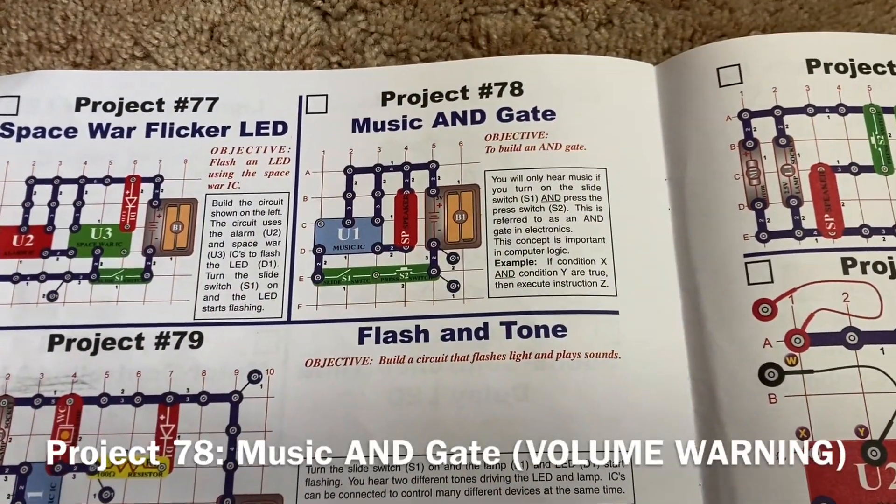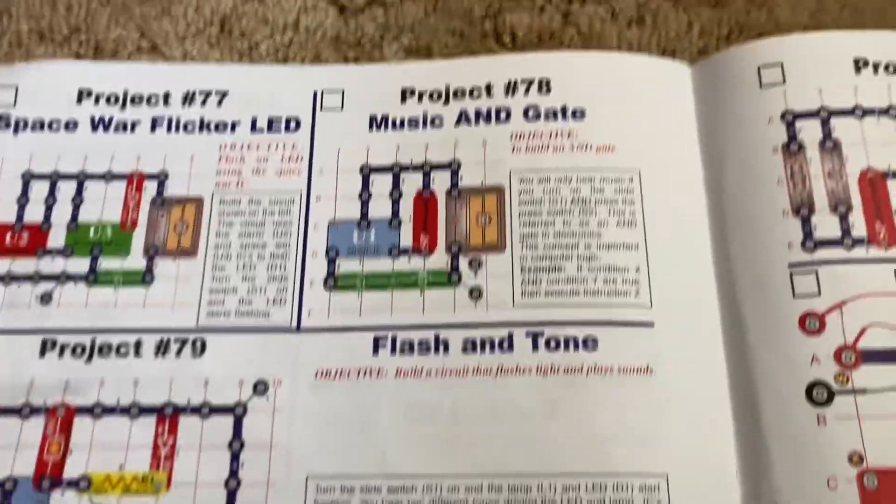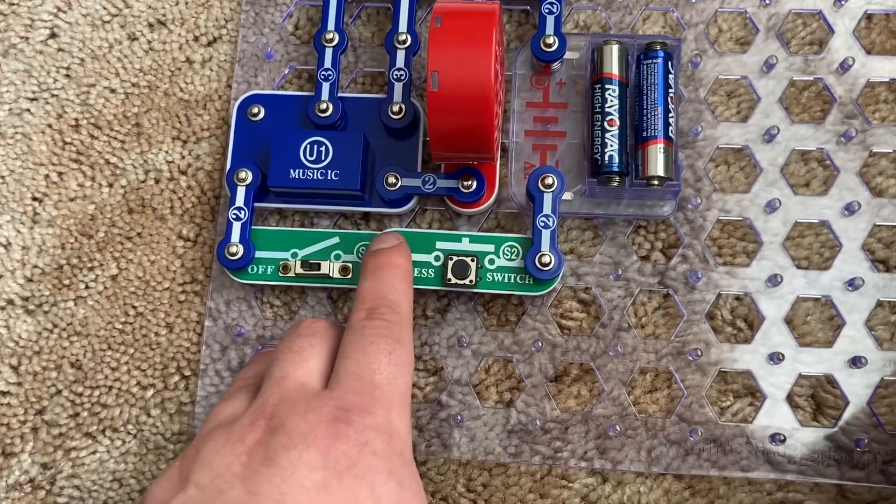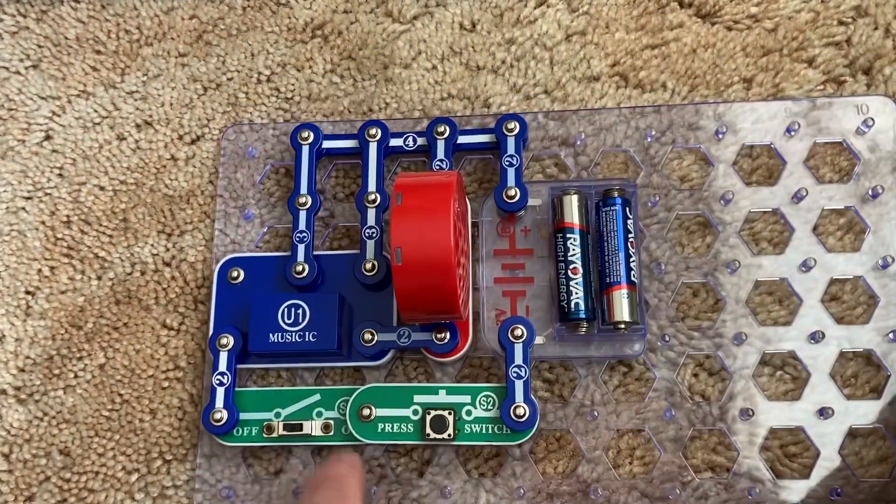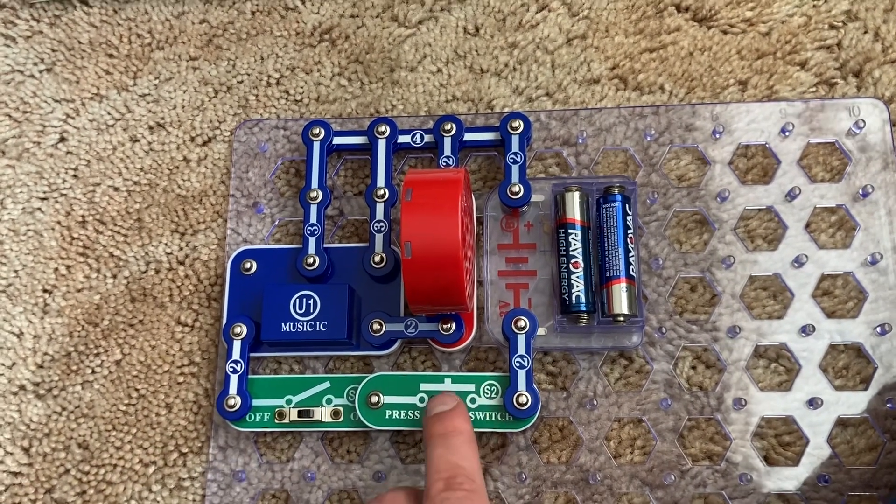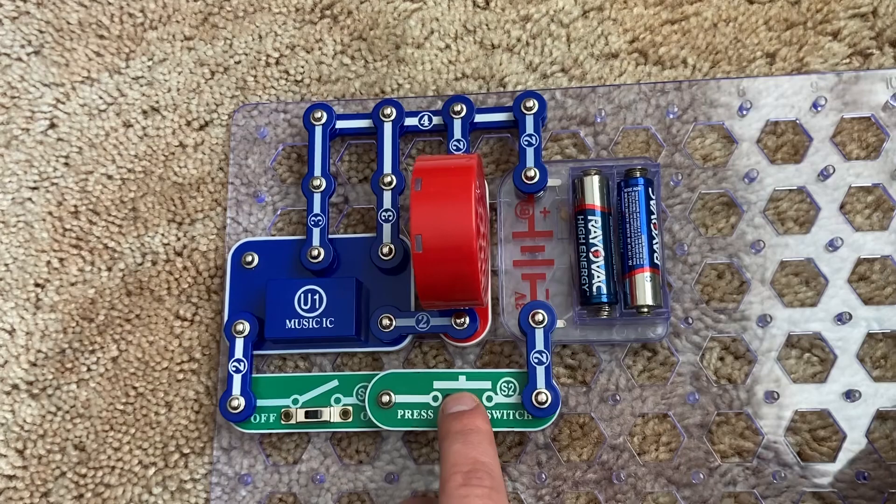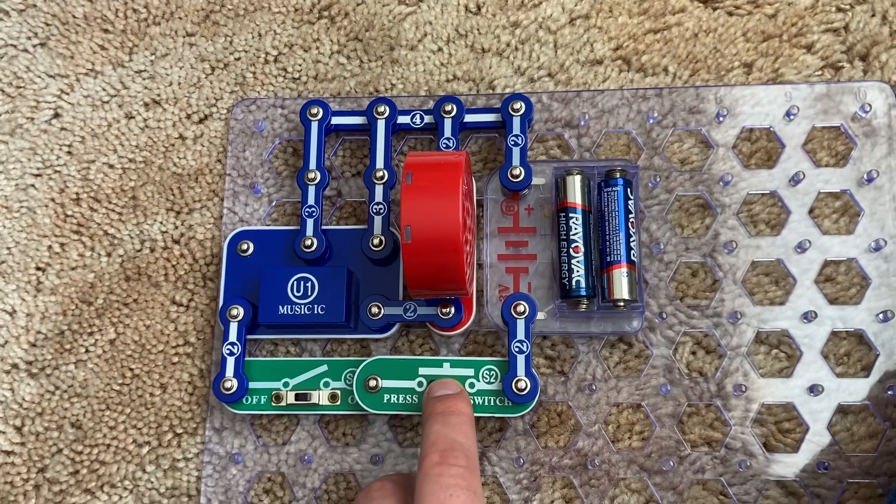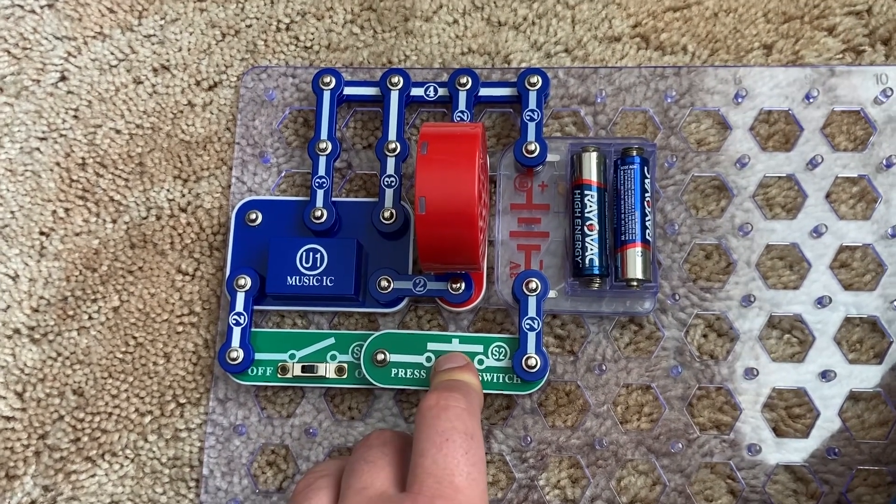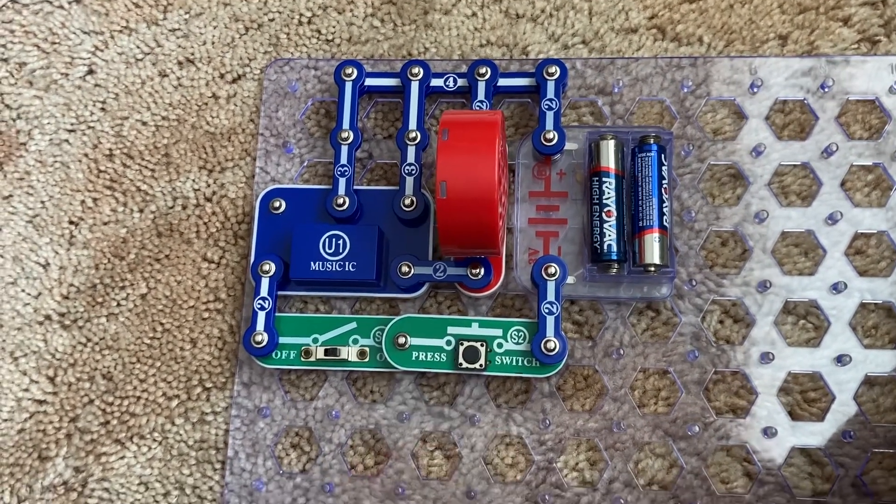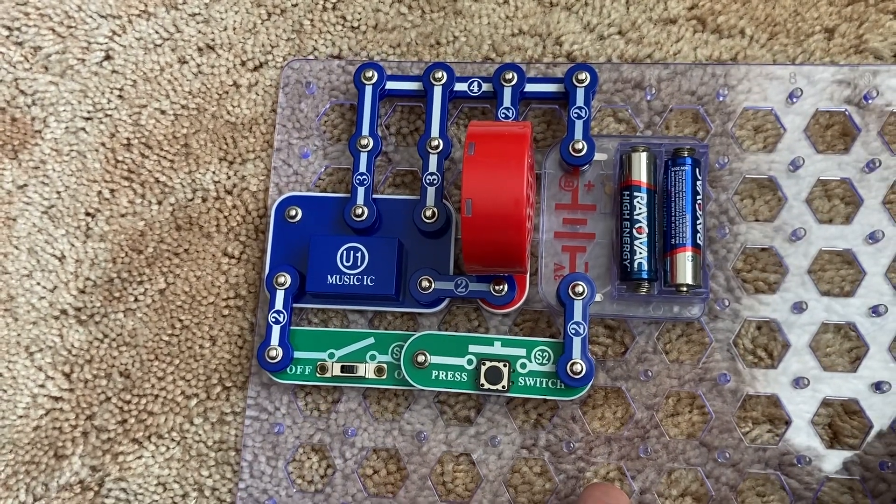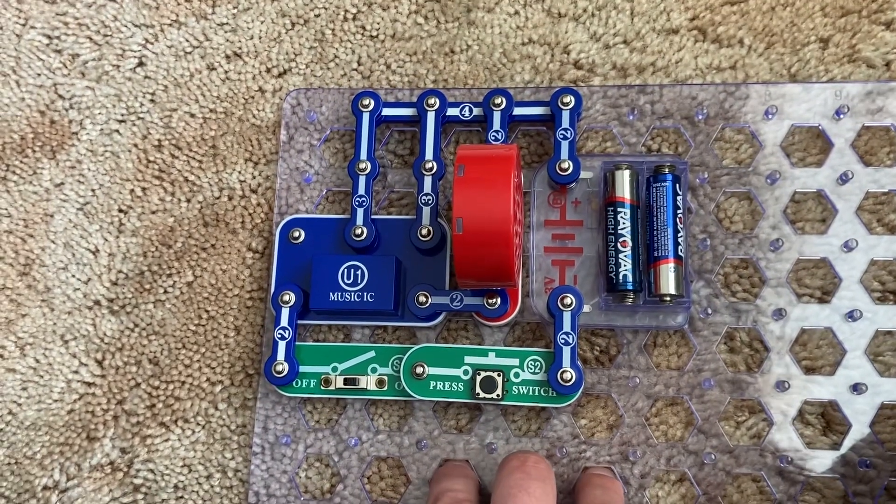Project 78 is music and gate. I have the slide switch and press switch connected together in series. And I will have to switch on the slide switch and hold down the press switch for the music to play. This is another example of an AND gate circuit, which would be common in computer logic. An example would be if condition X and condition Y are true, then execute instruction Z.